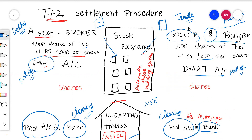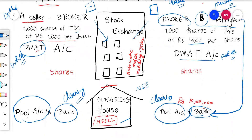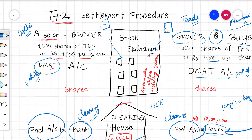As the order matched, the buyer's bank account is debited with Rs. 10 lakh. The money deducted from the buyer's bank account is credited to the buyer's broker's pool account at the clearing bank. This is called the pay-in day.